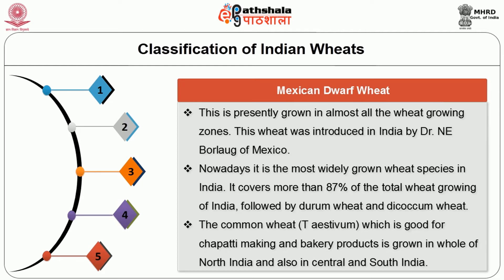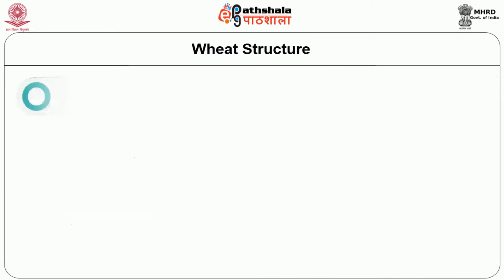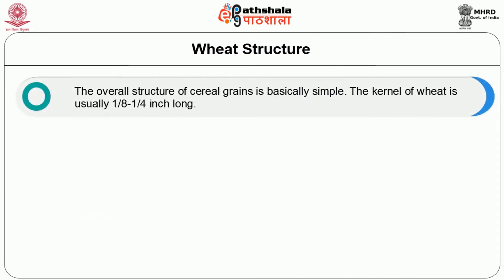Mexican dwarf wheat is presently grown in almost all wheat-growing zones. This wheat was introduced in India by Dr. Norman Borlaug of Mexico. Nowadays it is the most widely grown wheat species in India, covering more than 87% of the total wheat growing area of India. The most common wheat, which is good for chapati making and bakery products, is grown in the whole of North India and also in Central and South India.